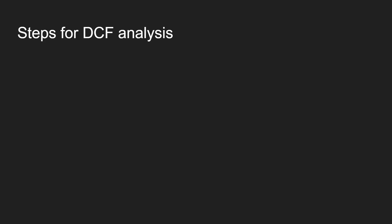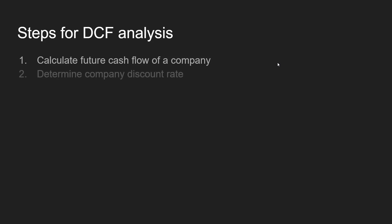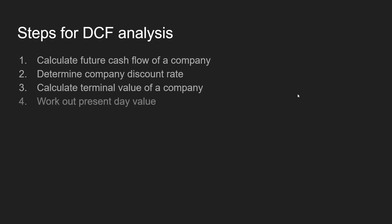Let's now have a look at the steps you have to go through for the discounted cash flow analysis. Number one, we need to calculate the future cash flow for a particular company. Number two, we need to determine the company discount rate, which is the rate of return that you're looking for. Number three, we need to calculate the terminal value for a company, assuming it keeps on operating for a long period of time. Number four, we need to work out the present day value from the projected future cash flow. And number five, with all the information above, we can calculate the fair value for the company stock today.